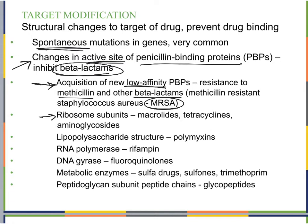We also see target modification in changes to ribosome subunits — macrolides, tetracyclines, and aminoglycosides target ribosomes, so if bacteria change the shape of the ribosome, these antimicrobials no longer work. The same applies to lipopolysaccharide structure, RNA polymerase, DNA gyrase, metabolic enzymes like those that make folic acid (targeted by sulfa drugs and trimethoprim), and peptidoglycan subunit peptide chains. All the ways we've found to target bacterial cells, bacteria are finding ways to overcome through target modification.